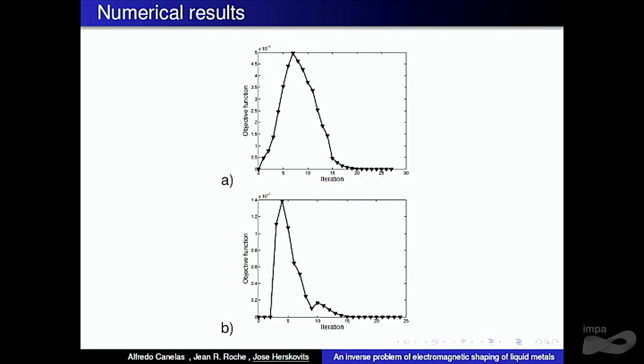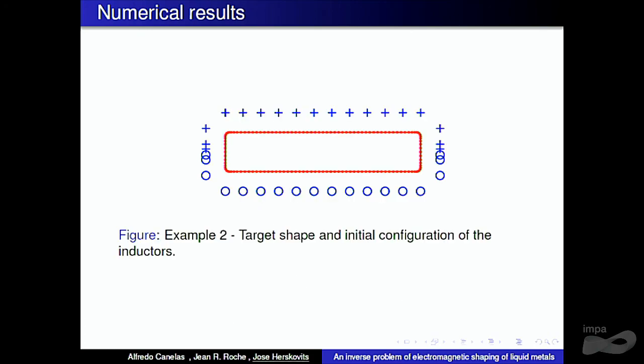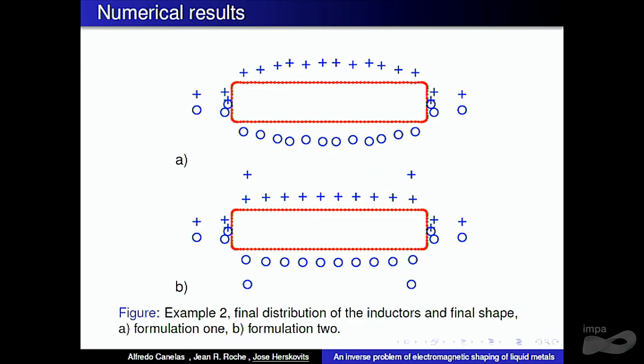Here is the iterative process. You can see that we make fewer than a certain number of iterations. Here is another example — this is the target shape, these are the initial positions of the wires, and here we have the optimal distribution of the wires for formulation one and formulation two.